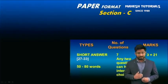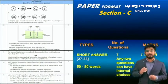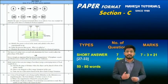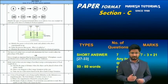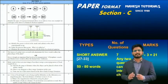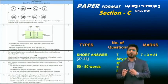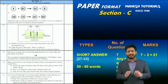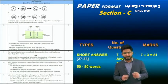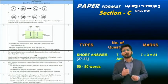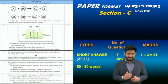Section C has seven questions and again any two questions can have internal choices. Each question carries a weightage of three marks, making the total 21 marks. These are short answer type questions, so you answer them in 50 to 80 words. The ideal method is: for one mark write two points, meaning for a three mark question you write a minimum of six valid points.